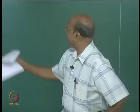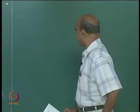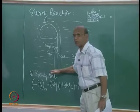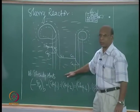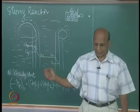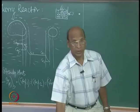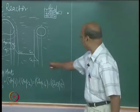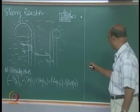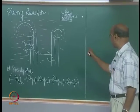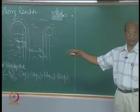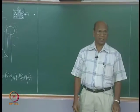So let us start now. This slurry reactor - I have written in between those steps: step 1, step 2, step 3, step 4. What is left now is writing an equation for each and every step. Steps 1, 2, and 3 is mixing of A in the bulk.